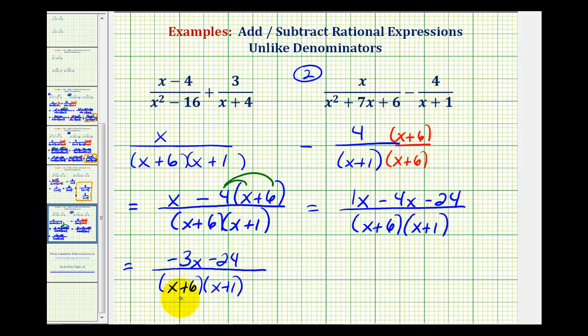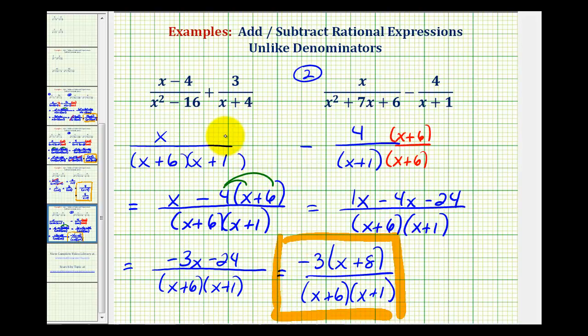Now we always want to see if we can try to simplify. To do this, we'll factor the numerator. And the greatest common factor here would be three. But let's factor out negative three. That would leave us with x plus eight. Notice in factored form, we can see we do not have any common factors between the numerator and denominator. And therefore, we know it's in simplest form. This would be our difference. Okay, I hope you found this helpful.